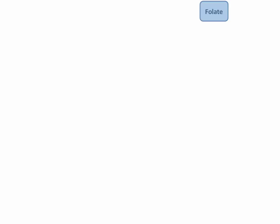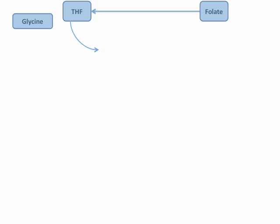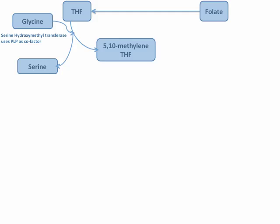To begin, folate must first be converted into tetrahydrofolate through a complicated series of biochemical reactions. Tetrahydrofolate then needs to be rearranged with the action of glycine and serine and the enzyme serine hydroxymethyltransferase, which uses PLP as a cofactor, or vitamin B6, into 5,10-methylene tetrahydrofolate.